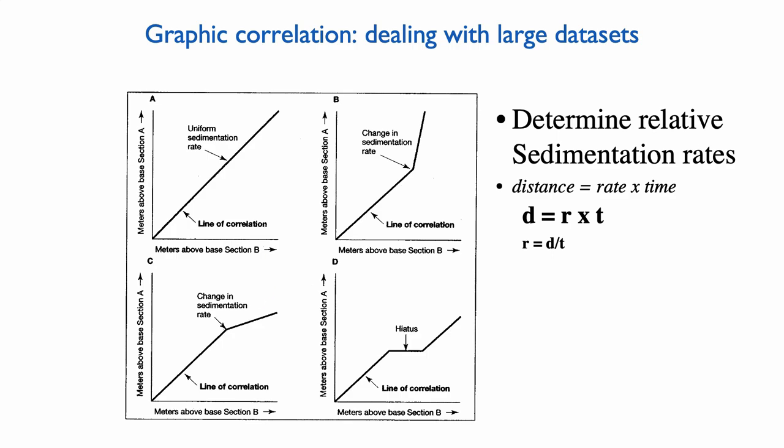And in the example C here, you can see the reverse, where essentially the ratio of sedimentation rate in section A versus B is decreasing. And there's also a case, the possibility, that you might actually have a hiatus in one of the two sections. So in this case, you see in example D that we have an increase in sedimentation at both sections. But then interestingly, as we accumulate sediment at section B, we accumulate no sediment at section A. In other words, we have a hiatus in section A before we resume normal sedimentation.